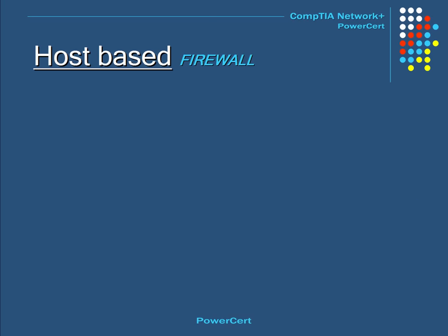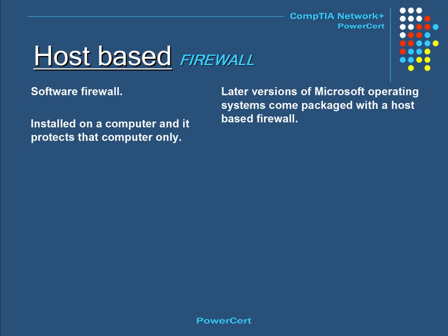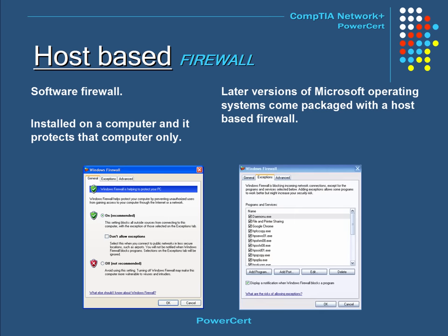Firewalls come in different types. One type is called a host-based firewall, which is a software firewall installed on a computer that protects that computer only. Later versions of Microsoft operating systems come prepackaged with a host-based firewall. You can turn it on or off, and create exceptions based on application name in the exceptions tab. You can also purchase a third-party firewall and install it on your computer.